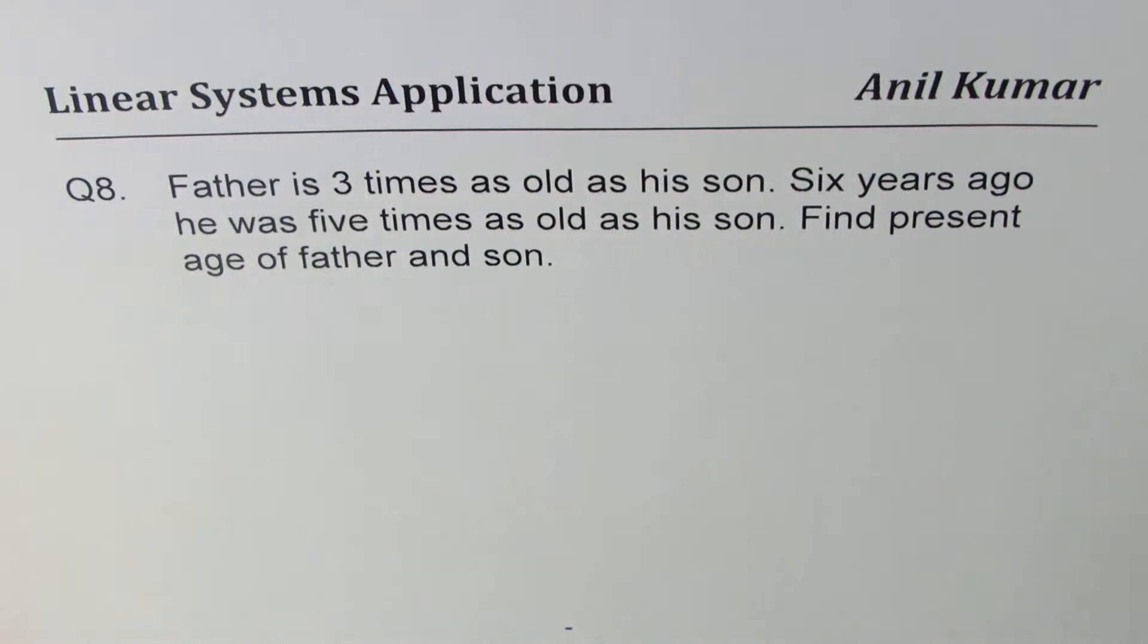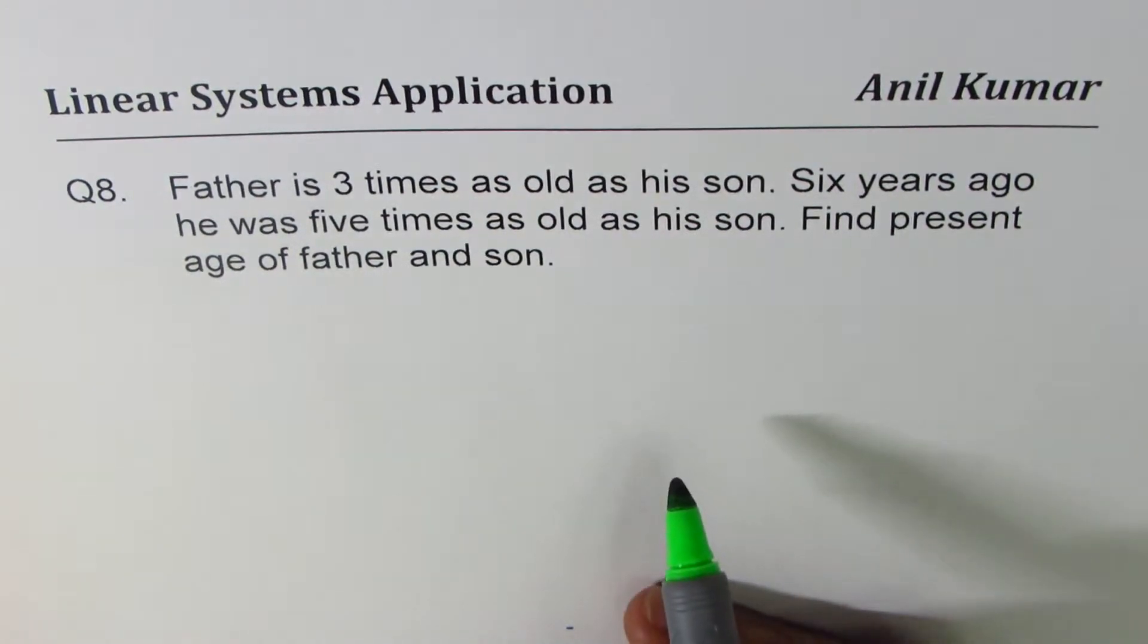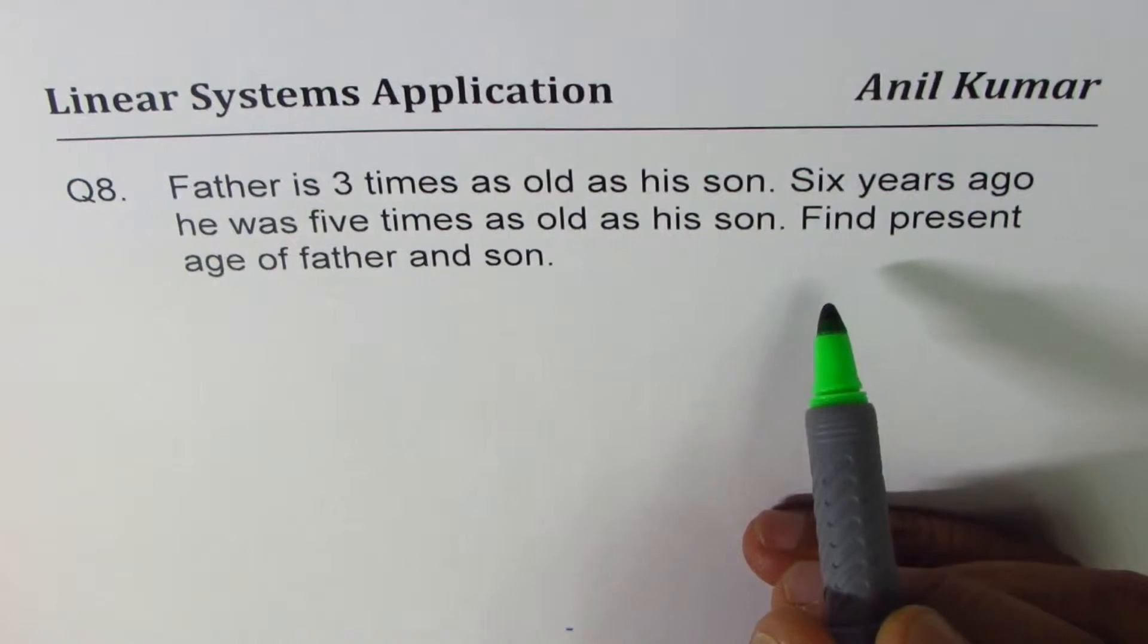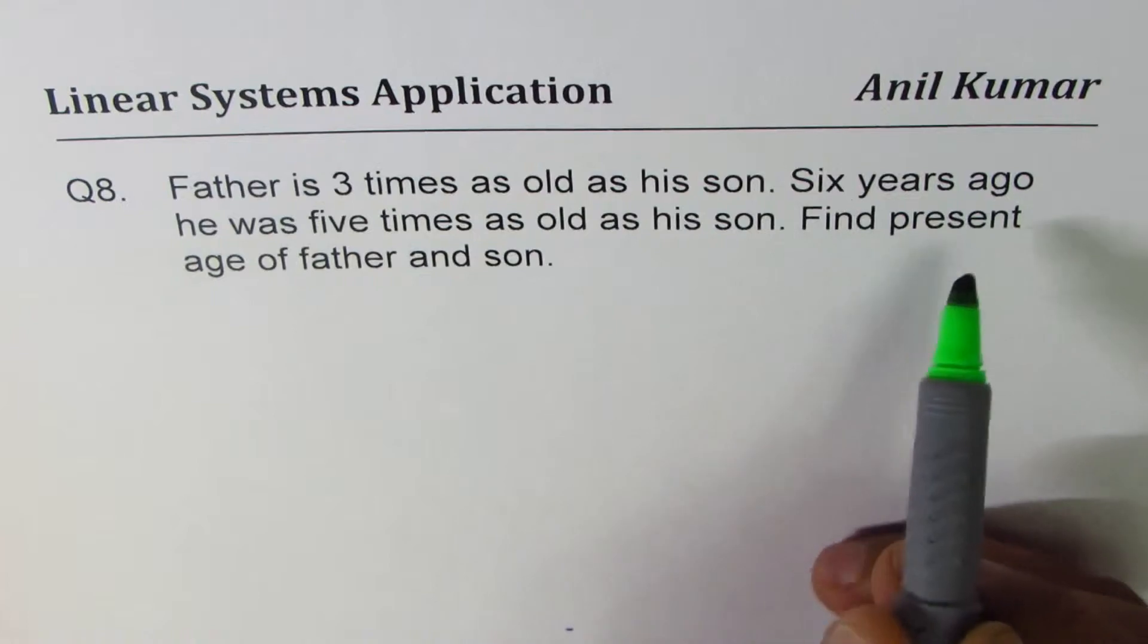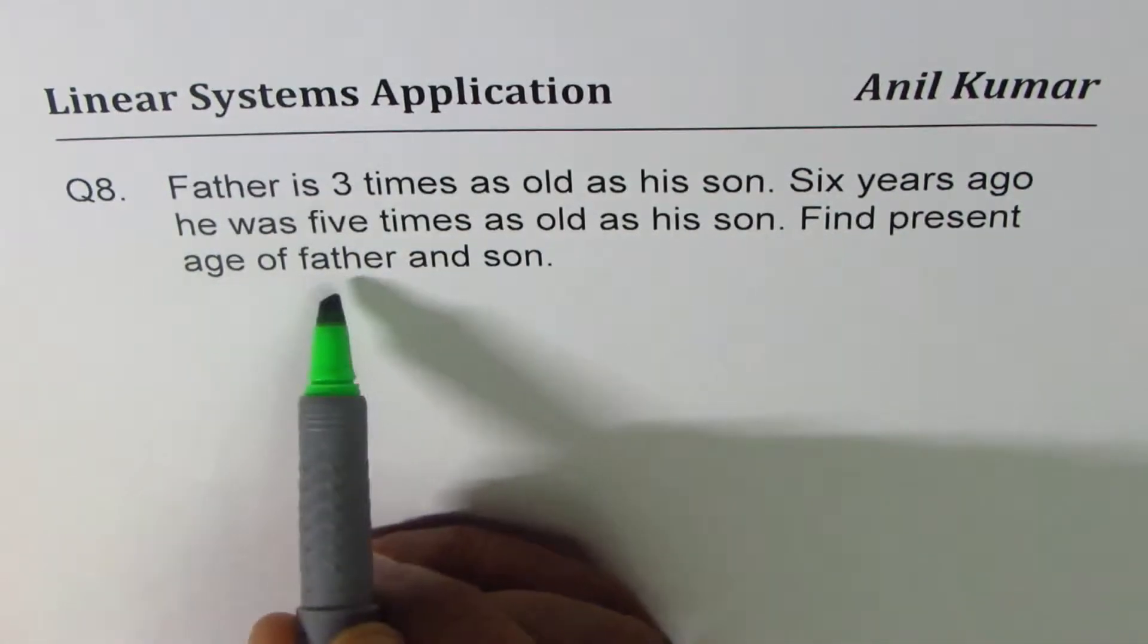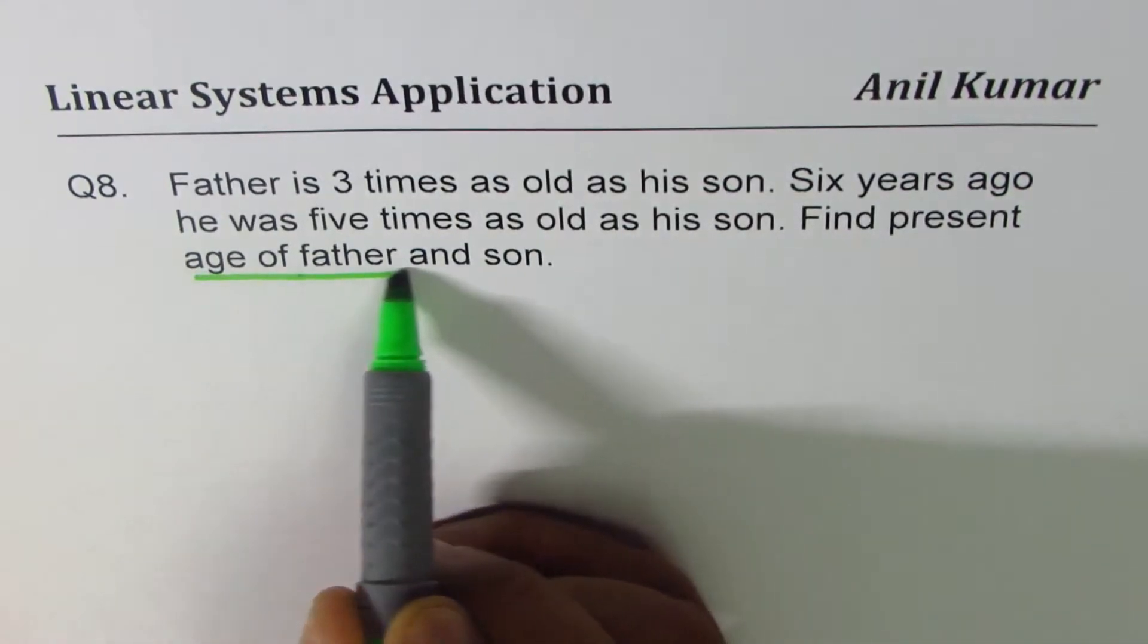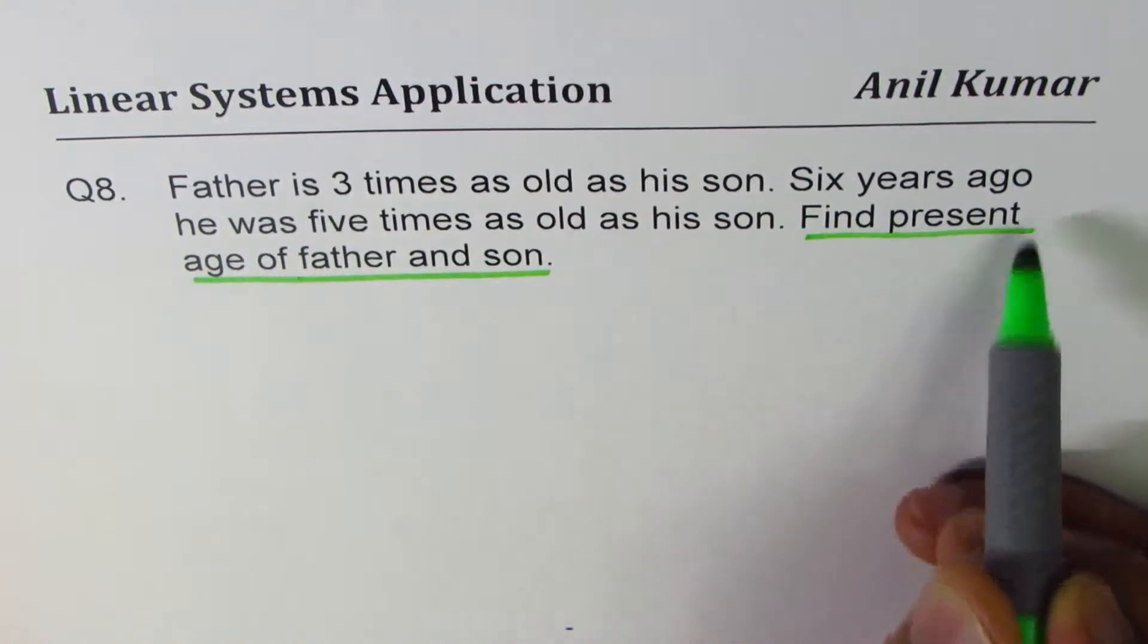Now whenever you read a question you should try to translate statements to equations after defining variables. How to define variables? That's what we are discussing first. Find present age of father and son. So what we need to find is present age of father and son. That gives you a clue.